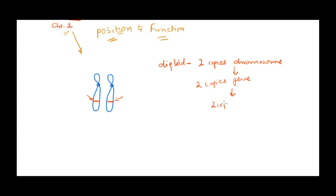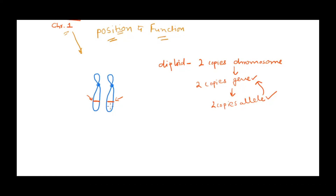We've spoken about genes and alleles — alleles are nothing but different forms of the same gene. The variation in pigmentation is because of differences in the gene sequence, making it code for a slightly different pigment or slightly different phenotype. These are nothing but alleles of that same gene.